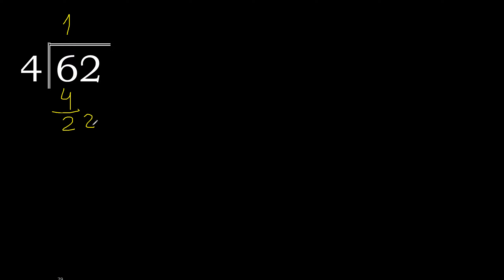Next: bring down, giving 22. 4 multiplied by 6 is 24, which is greater. 4 multiplied by 5 is 20. Subtract: remainder is 2, with no more digits.